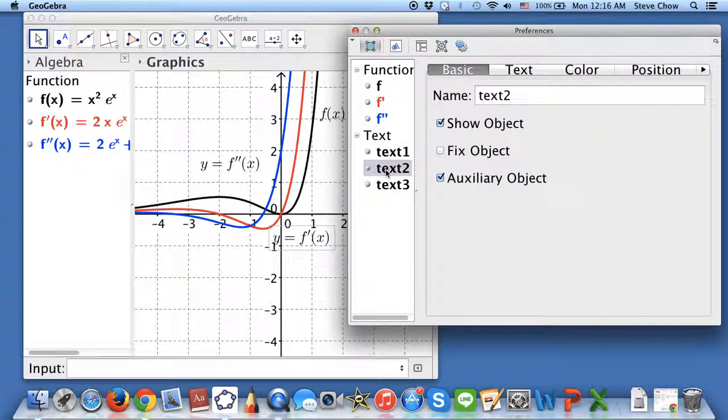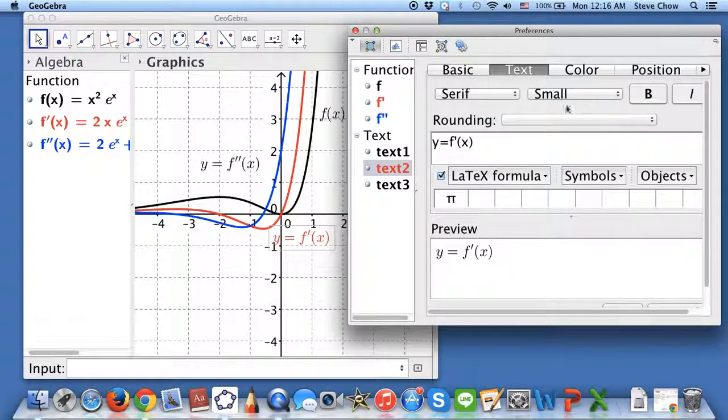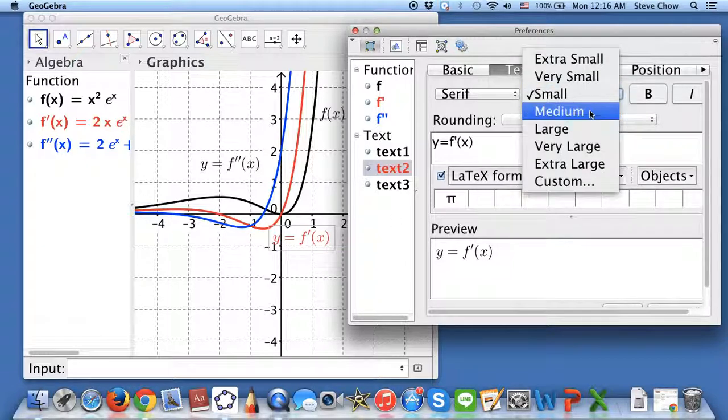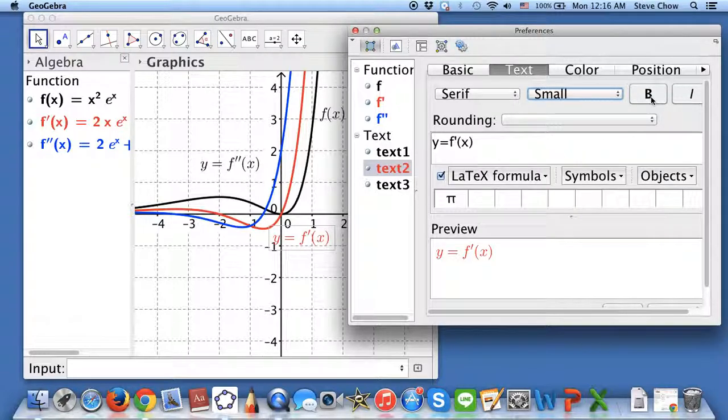And as you can see, this is text box number two, which is this one. And I can go to color. This is the first derivative. So let me choose red. And if you go to text right here, you can also make the words bigger right here, or smaller if you like. I think this is good. Make it bold to make it more stand out if you like. But let me just keep it as how it is.